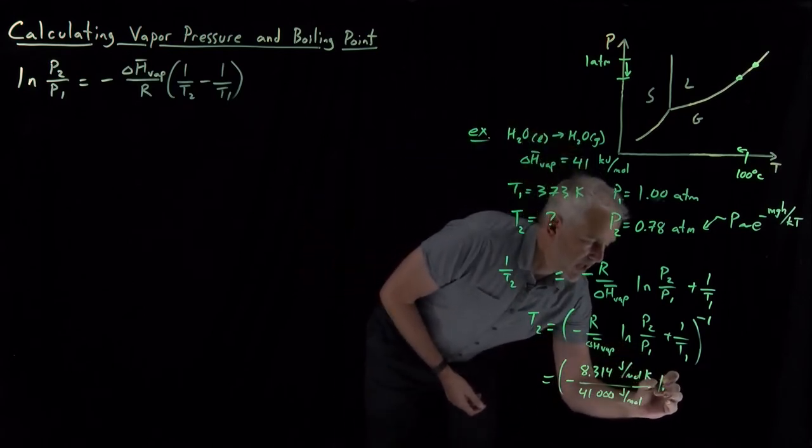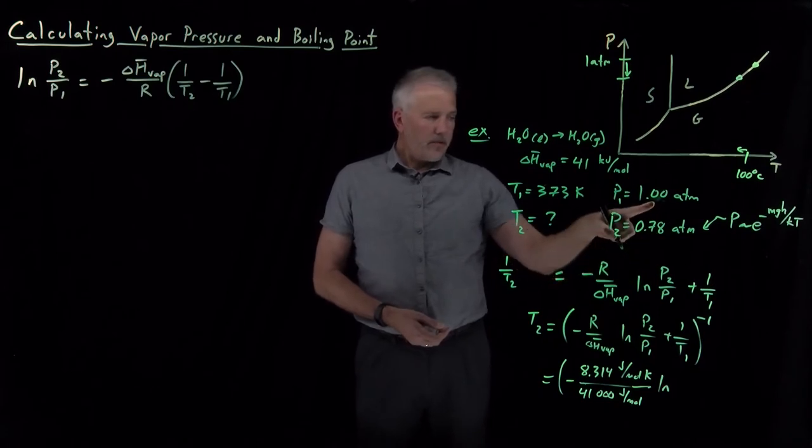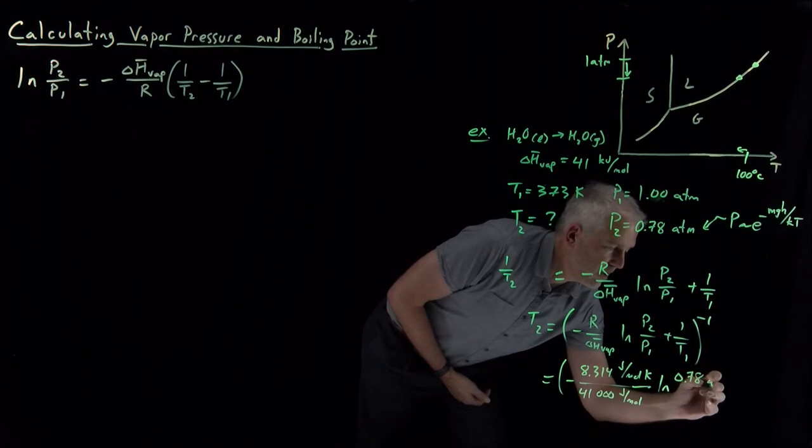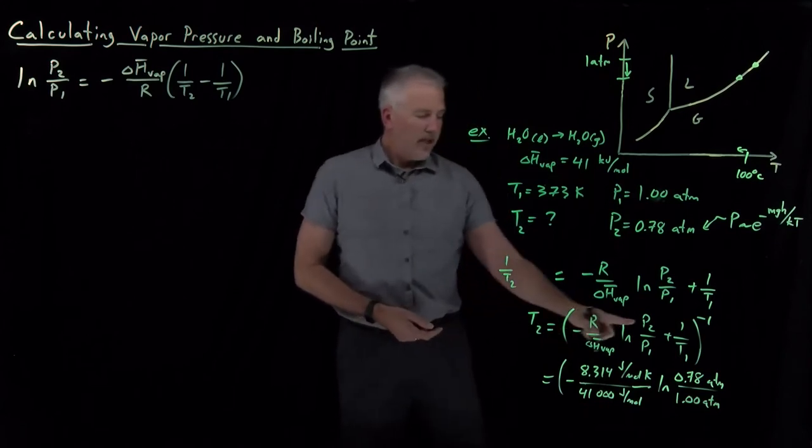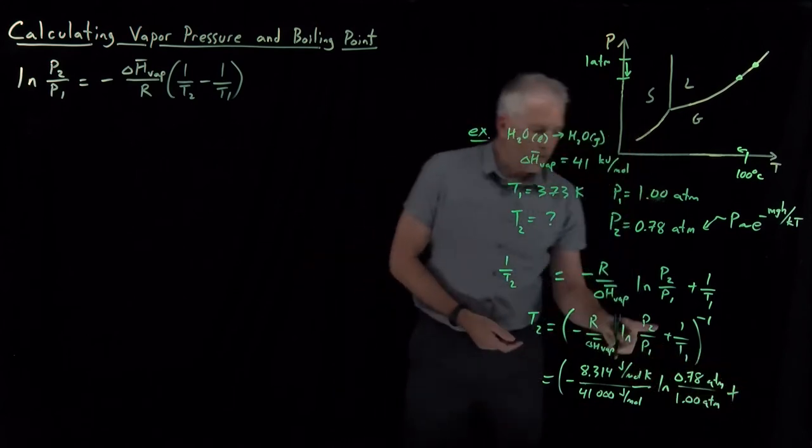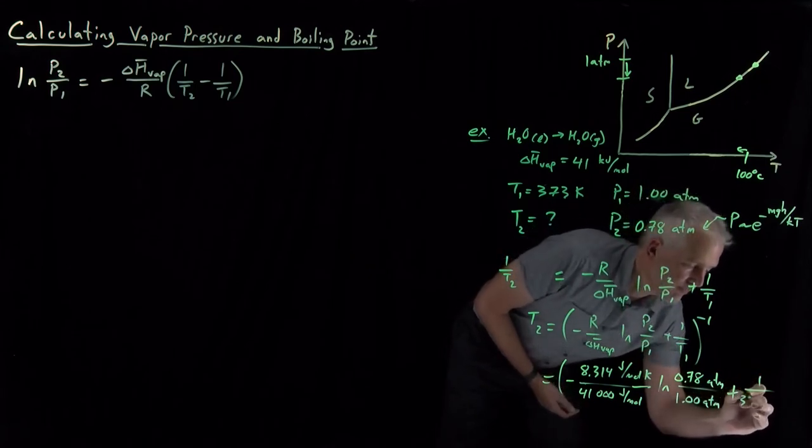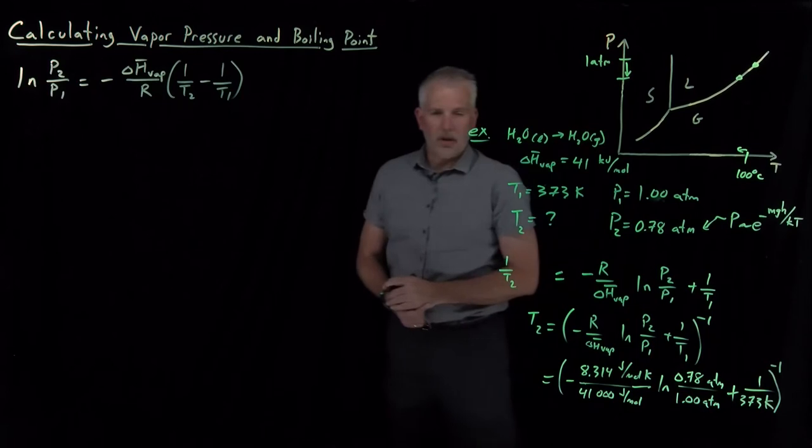I multiply that by the natural log of P2 over P1. The lower pressure divided by the higher pressure in this case. So 0.78 atmospheres divided by the original pressure of one atmosphere. Add that to one over this temperature, 373. And take one over all of that.